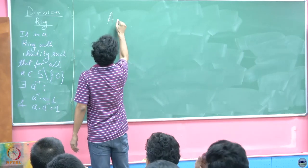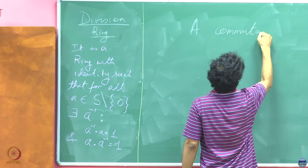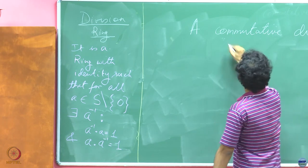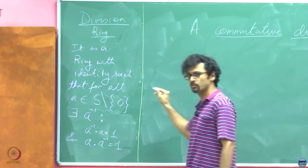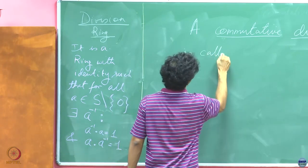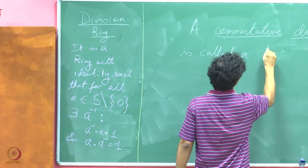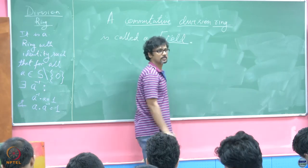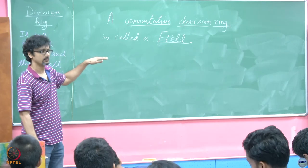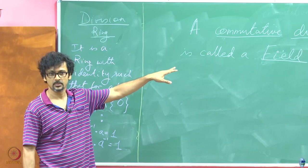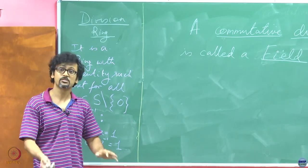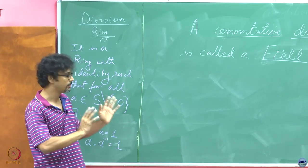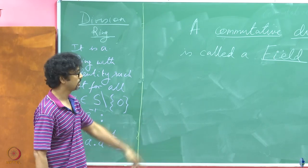A commutative division ring has a special name — it is called a Field. This is the most important object we will come across. It is the starting point of everything in formal linear algebra. A commutative division ring is called a field, and this is where our scalars will come from.